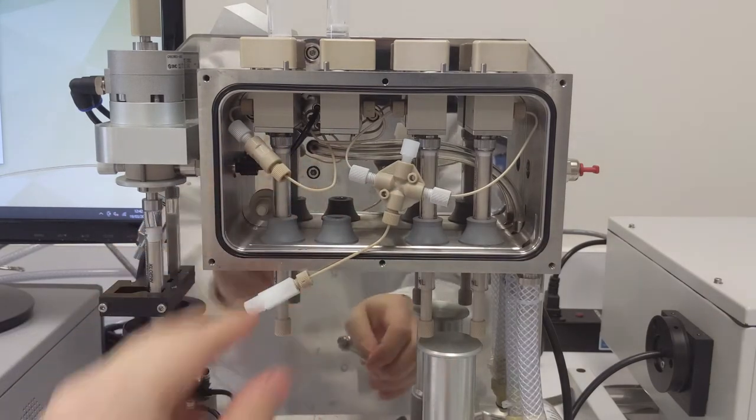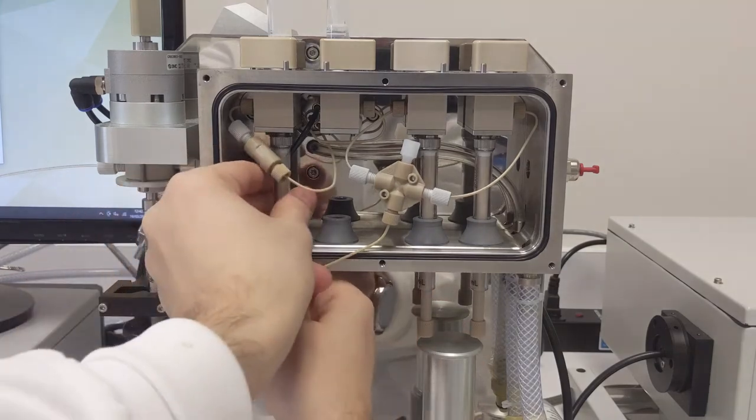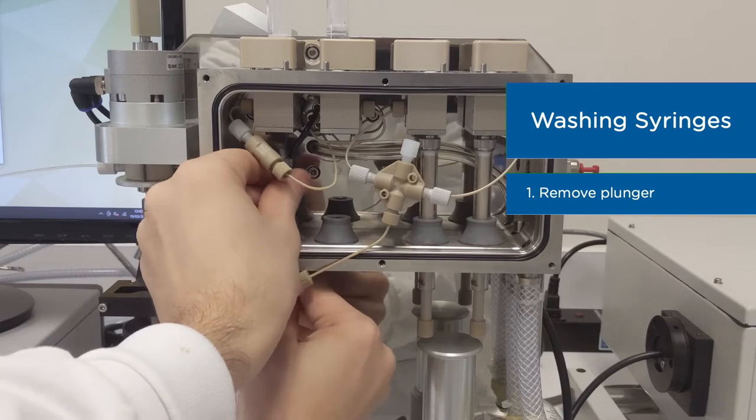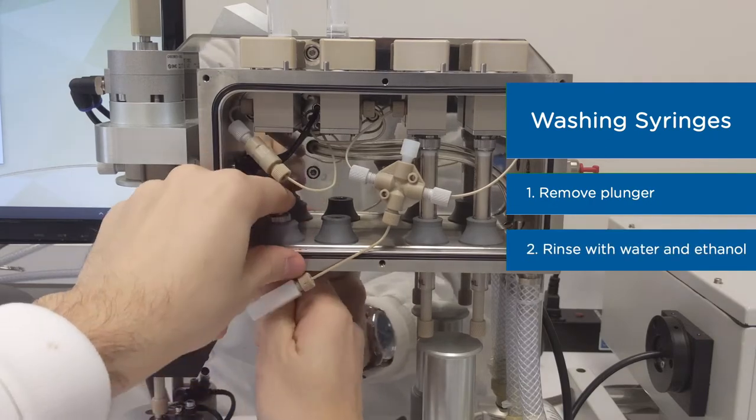Syringes are typically removed for cleaning, especially if you observe some dirt or particulates during your experimental run. Removing the plunger and washing the inside of syringe with water and ethanol can be very helpful in this case.